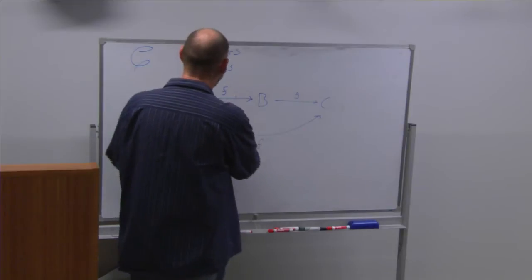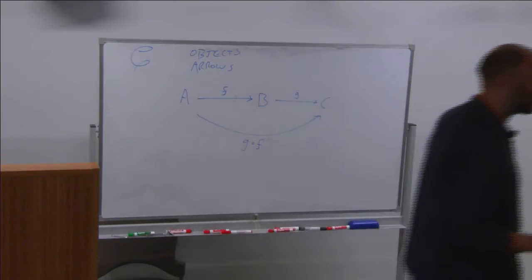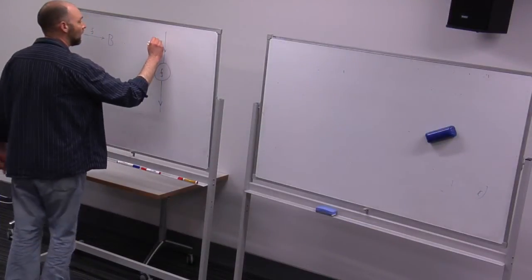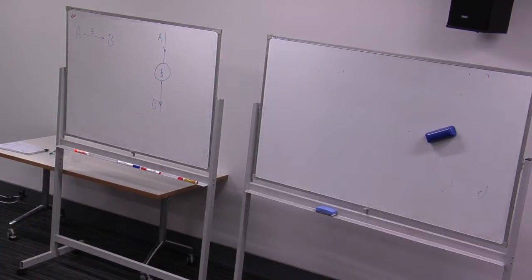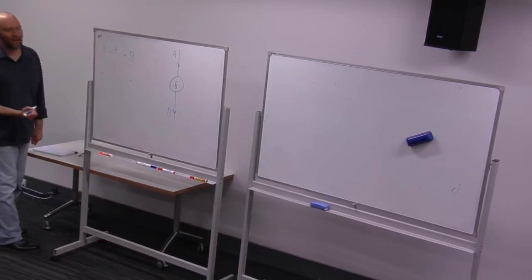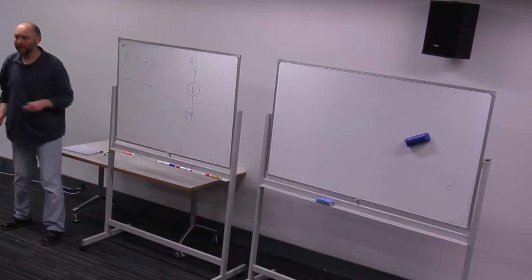We've got the objects and the arrows, and we tend to draw things in a certain way, but for the purposes of this talk I'm going to change the way that we draw our arrows. In the old diagram, I drew my arrow like a line between points A and B with a little head on it to show direction. The objects were zero-dimensional — just points — and the arrows were one-dimensional lines.